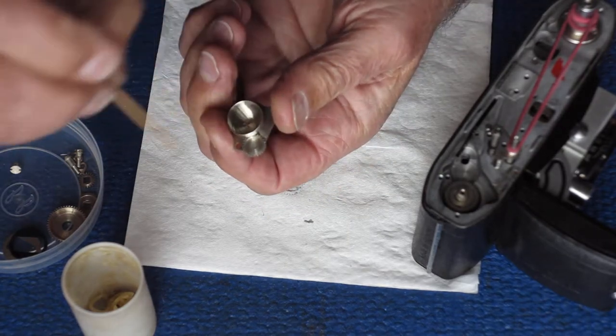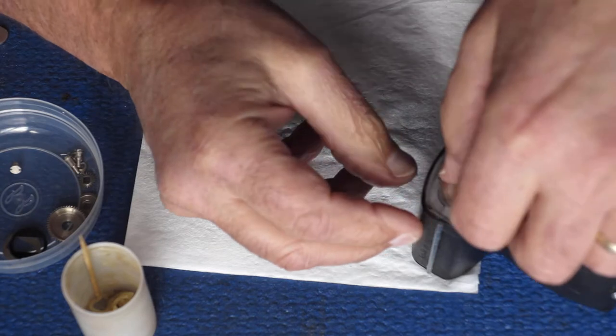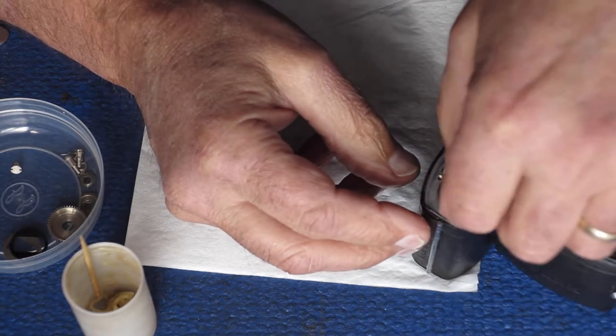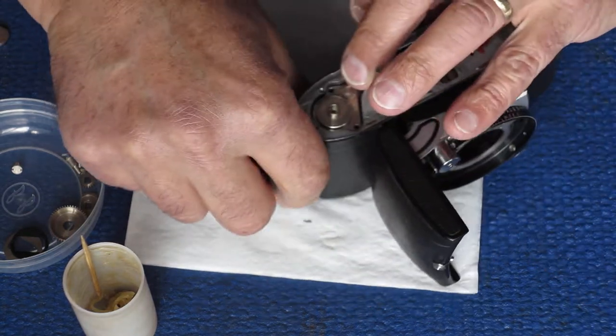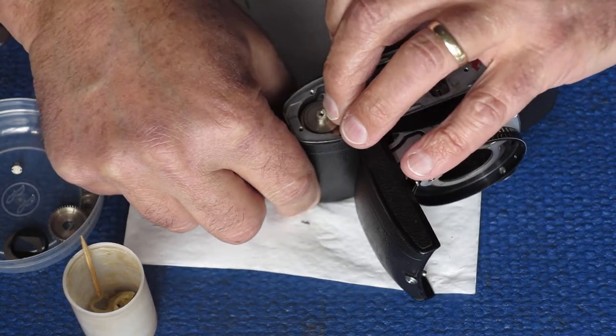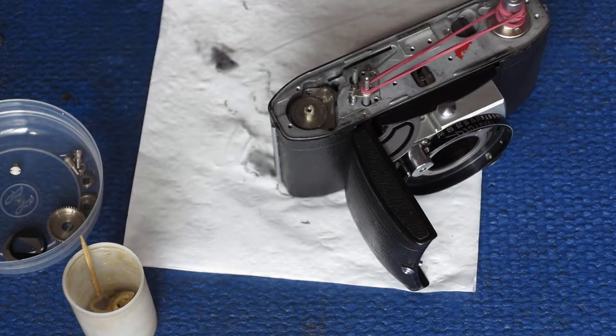A little bit in the centre. And that can drop into place. Normally you have to give the take-up spool a bit of a spin with your fingers, just to make that gear drop and engage.